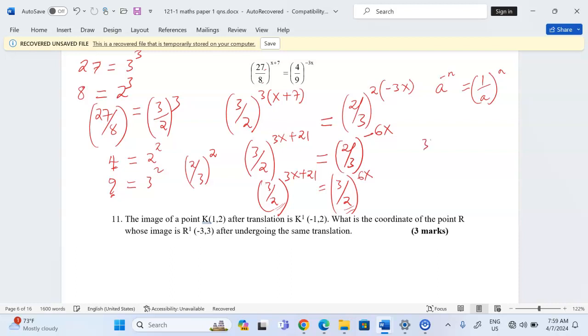And that will be 3x plus 21 equivalent to 6x. So when we group like terms together, this will become 3x because it will be 6x minus 3x. Then we remain with our 21 here.